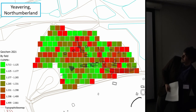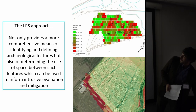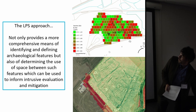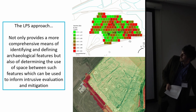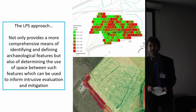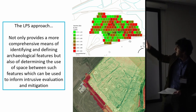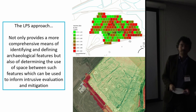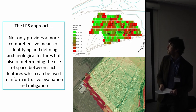These are the kinds of questions we can start asking at evaluation stage and then use to inform mitigation. The LPS approach not only provides a more comprehensive means of identifying and defining archaeological features, but also determining the use of space between such features. There is a temptation to get fixated on features and defining them in ever greater detail, whereas it's the use of space — the spaces we inhabit between these features — where we can really start to create more interesting, compelling narratives about the archaeological record.